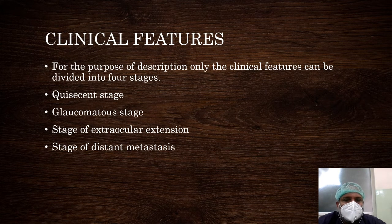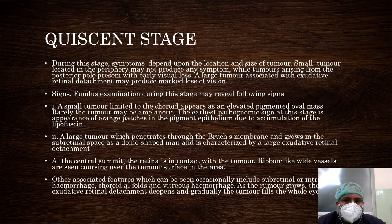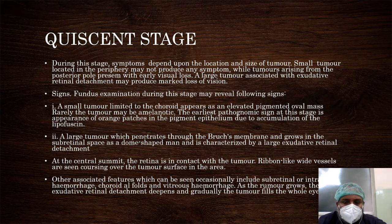The clinical features progress through stages: the quiescent stage, glaucomatous stage, extrascleral extension, and distant metastasis. During the quiescent stage, symptoms depend upon the location and size of the tumor. A small tumor in the periphery may not produce any symptoms. On fundus examination, a small tumor appears as an elevated pigmented oval mass. A large tumor which penetrates Bruch's membrane grows into a subretinal dome-shaped mass. Other features include subretinal and intraretinal hemorrhages, choroidal folds, vitreous hemorrhage, and physically associated features.